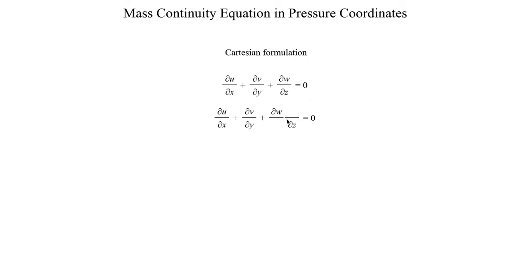Since we're trying to get into pressure coordinates, it makes sense to use a differential of pressure. So we plug in dp in the denominator and dp in the numerator. From an algebraic standpoint, this equation hasn't really changed — if you cancel out those dp differentials you're left with just dw/dz, which is what we started with.